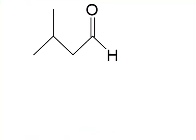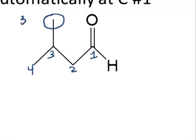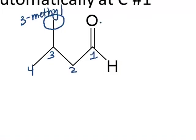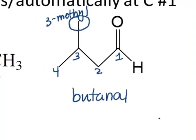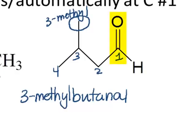In another example, designating the carbonyl carbon as carbon one gives four carbons in the backbone with an additional carbon as a methyl substituent. The base name for four carbons in an aldehyde is butanal. Including the branch, the molecule is called 3-methylbutanal. Be careful to always number the carbonyl carbon as carbon one — it's easy to overlook and skip it by accident.